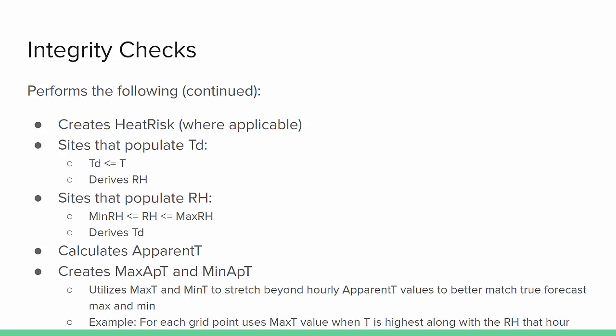Heat risk is created where applicable. Sites that populate dew point will have a temperature and dew point check done and then RH will be derived, whereas sites that populate relative humidity will have the RH checked with min and max RH and TD derived. This step also calculates apparent temperature and creates maximum apparent temperature and minimum apparent temperature grids.